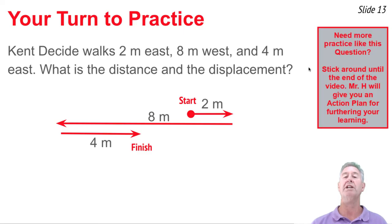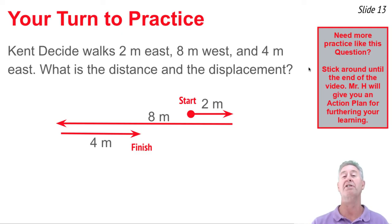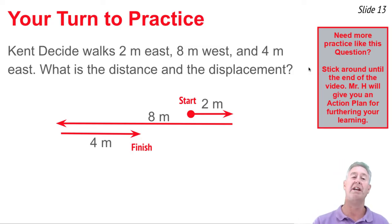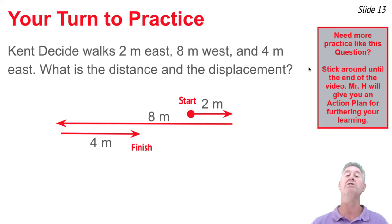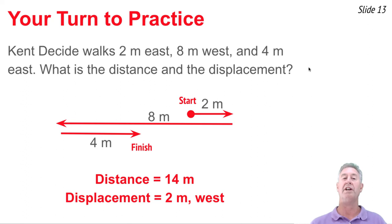When it comes to displacement, I do have to consider directions. I consider the 2 meters east as positive 2, the 8 meters west as negative 8, and the 4 meters east as positive 4. I add these values together with their signs, because displacement is a vector and the plus or minus represents east or west. So: positive 2 plus negative 8 plus positive 4 equals negative 2, meaning the displacement is 2 meters west. The final answers are: distance is 14 meters, and displacement is 2 meters west.